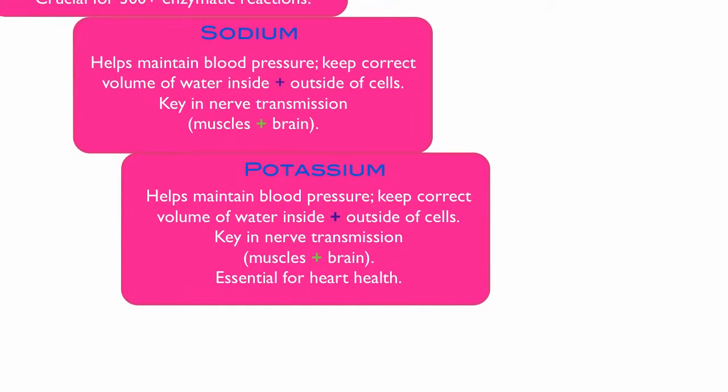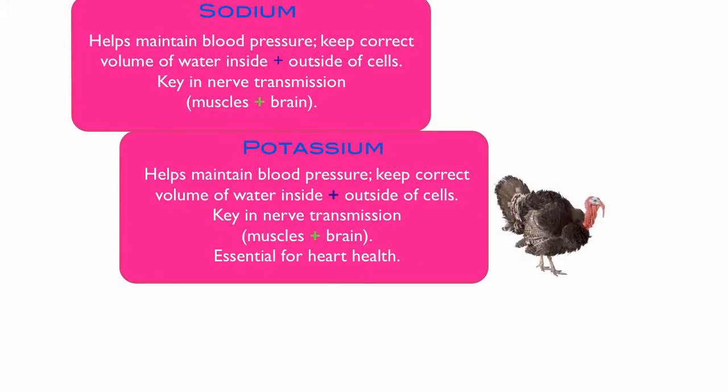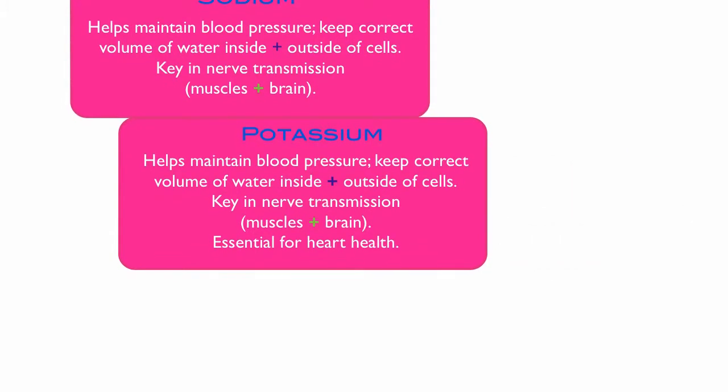Potassium also helps maintain blood pressure, keeping the correct volume of water inside and outside of the cells, and it's key in nerve transmission — particularly in the muscles and brain. It's also essential for heart health. Sodium and potassium are very closely related; they work together in tandem, specifically to maintain blood pressure inside and outside of cells and in nerve transmission. Potassium is found naturally in bananas, turkey, squash, and potatoes.